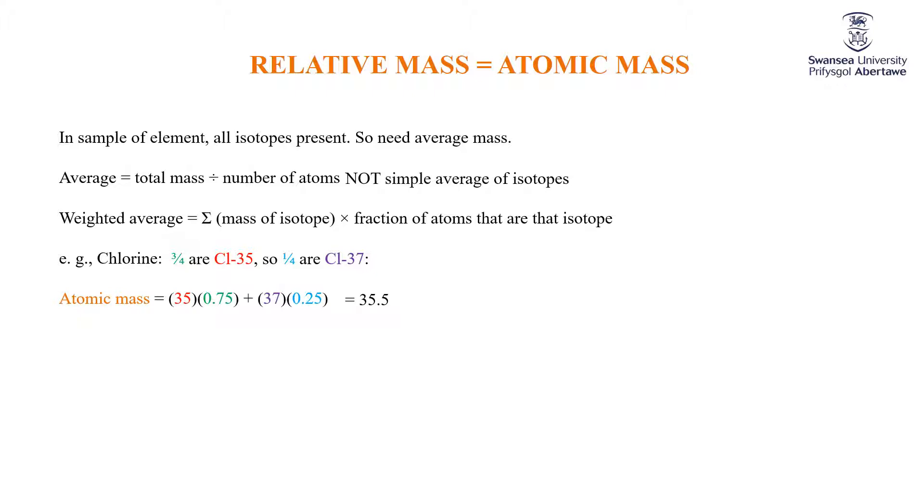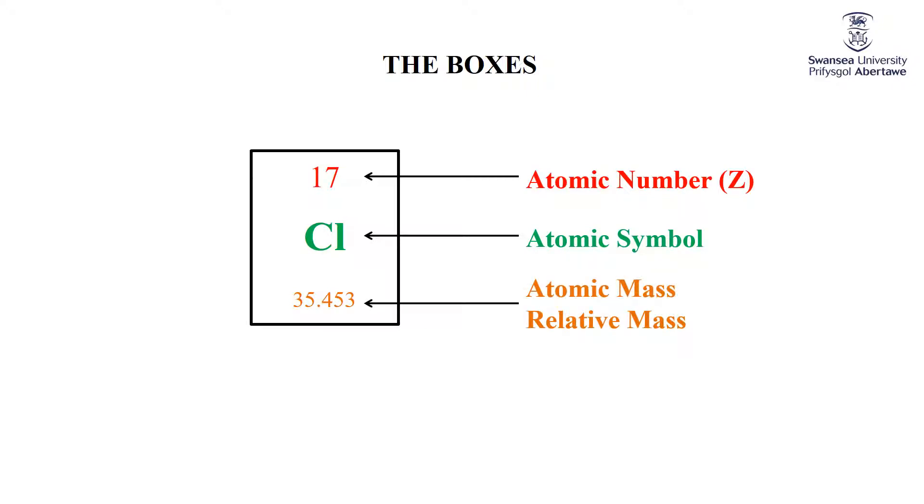As a final note, all of these things of interest are reported on the periodic table. If we think of chlorine, the box on the periodic table looks like this. You have Cl in the middle, which is the atomic symbol. You have 17 at the top. And in any periodic table box, there's a whole number that is the atomic number or Z. And then there's always a fractional number. That's the atomic mass or the relative mass, the observed relative mass.